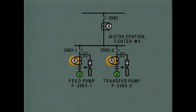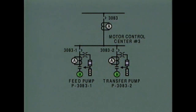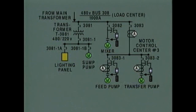The ammeter connected to the current transformer in each motor power circuit indicates how much current the motor is using. Each control circuit has a potential transformer, a fuse, and a start-stop switch. That completes our look at the paths and components in this electrical system.